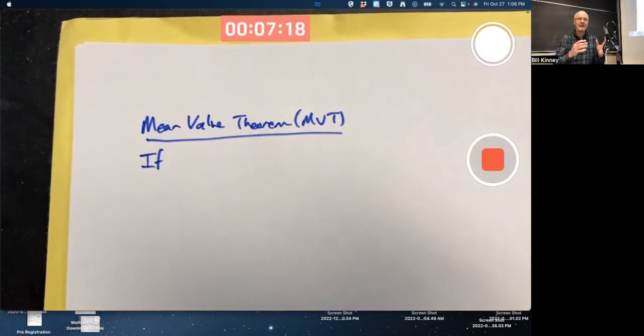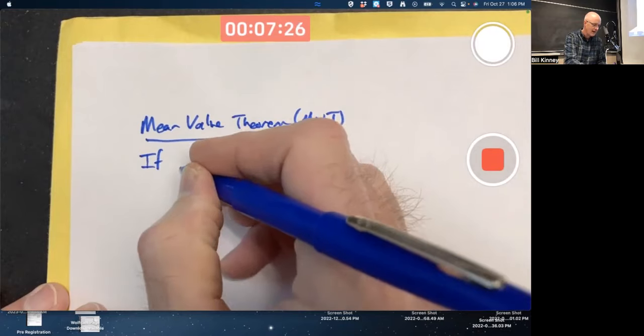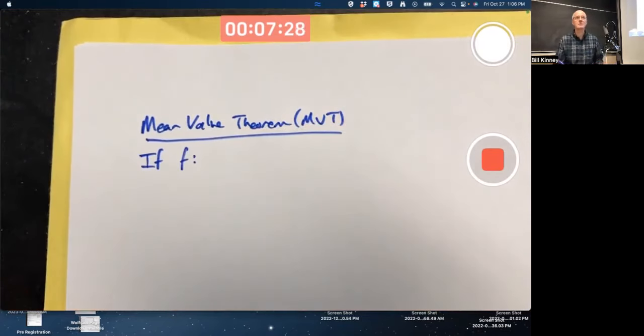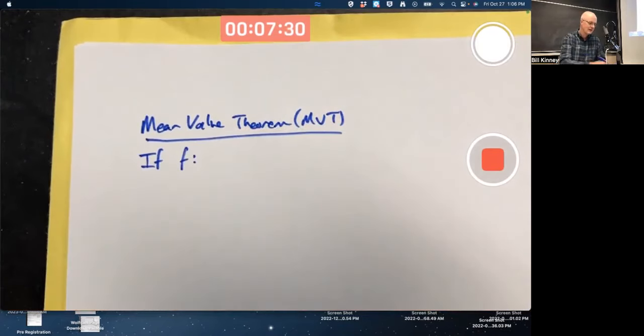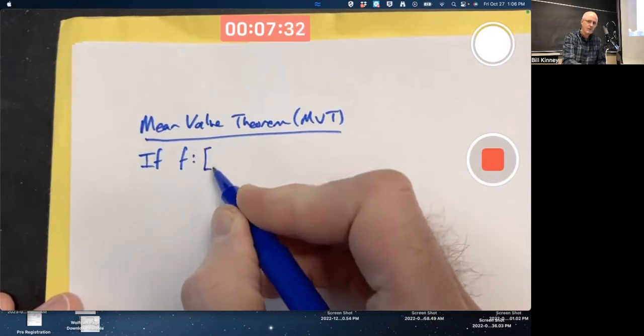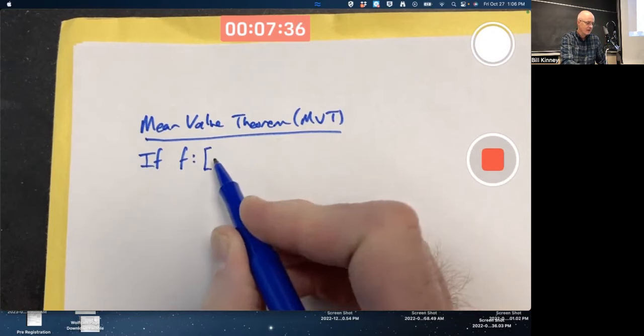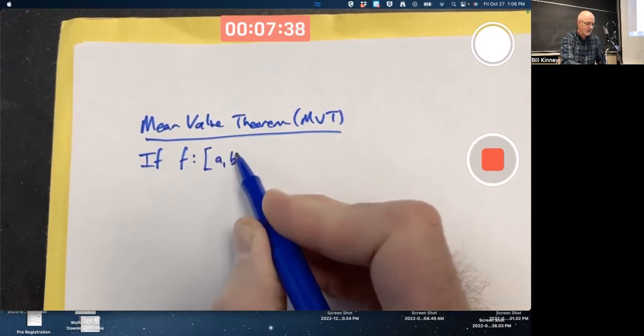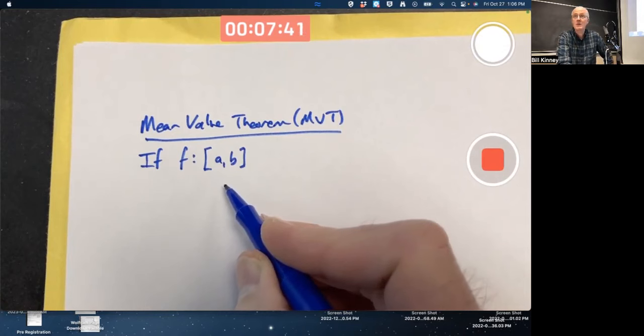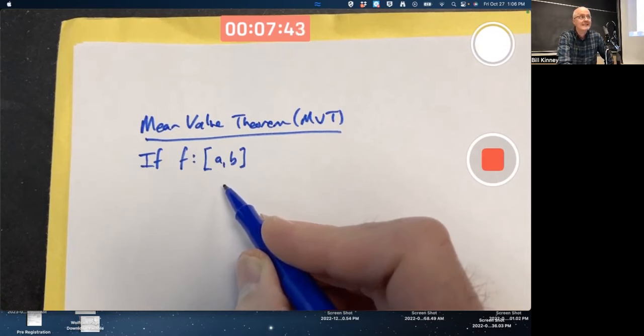You can state it as an if-then sentence. If something is true, then something else is guaranteed to be true. I'm going to use notation that I haven't used before. I'm going to write the function name right here and then a colon, the domain right here, and this you can see is the closed interval from A to B. Notice the square brackets.